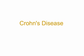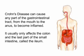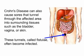Inflammation caused by Crohn's disease can affect the whole gastrointestinal tract, whereas ulcerative colitis only affects the colon. Crohn's disease can cause any part of the gastrointestinal tract, from the mouth to the anus, to become inflamed. It usually only affects the colon and the last part of the small intestine, called the ileum. Inflammation caused by Crohn's disease can involve all three layers of the intestines and causes intestinal swelling, intestinal scarring, and obstruction of the intestines. Crohn's disease can also cause sores that tunnel through the affected area into surrounding tissue, such as the bladder, vagina, or skin. These tunnels, called fistulae, often become infected.